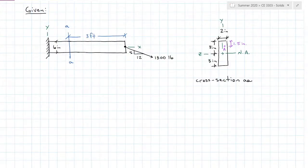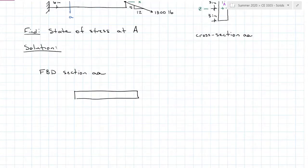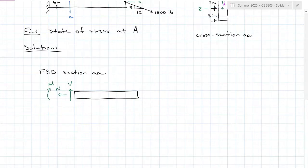My first example is a cantilevered beam with a rectangular cross-section at AA, six inches tall by two inches thick into the page. Cross-section AA occurs at three feet from the load of 1,300 pounds, and that load is acting through the center of the cross-section. I wish to find the state of stress at point A acting on cross-section AA. I'll start by figuring out what internal forces are present — drawing section AA, I'll have a shear, a normal, and a moment force. Since the 1,300 lb load is acting in plane with the X-Y surface and through the center of the cross-section, it's not going to create a torque.